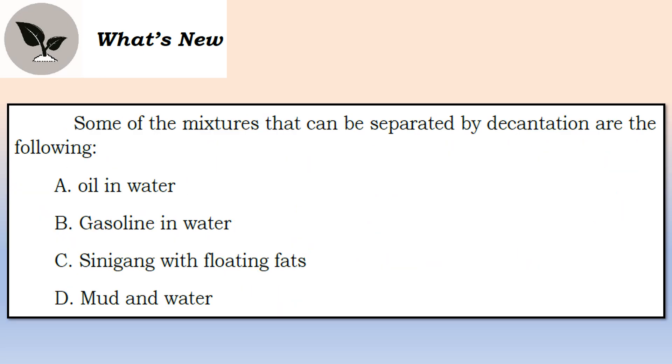Some of the mixtures that can be separated by decantation are the following. Ito yung mga mixtures na pwede natin ma-separate sa pamamagitan ng decantation. Number one, oil in water. Pag nating na natin, pag naghalo ang oil at ang water, nakikita natin na humihiwalay directly si oil. Masaseparate natin si oil automatically sa pamamagitan ng pag-pour nito or kukunin natin siya sa pamamagitan ng kutsara. Hindi na natin siya idadaan sa maraming proseso, agad-agad ay mahihiwalay na natin sila. Pangalawa, gasoline in water. Automatically, the gasoline will float in water. Sinigang with floating fats and mud and water. Ito yung mga iba't ibang mixtures na ma-separate natin using ang decantation.